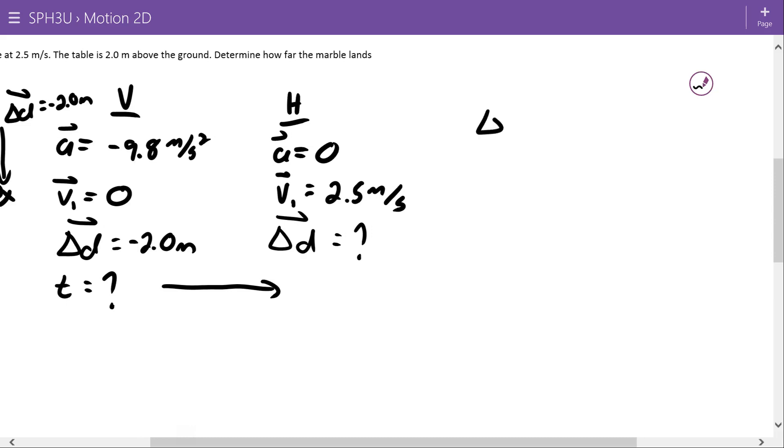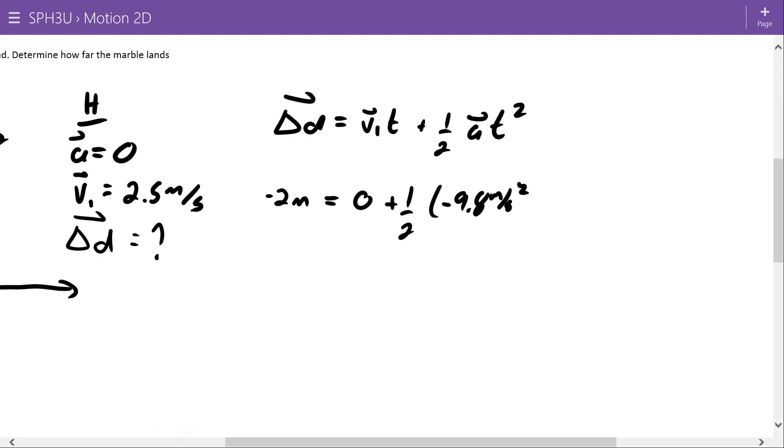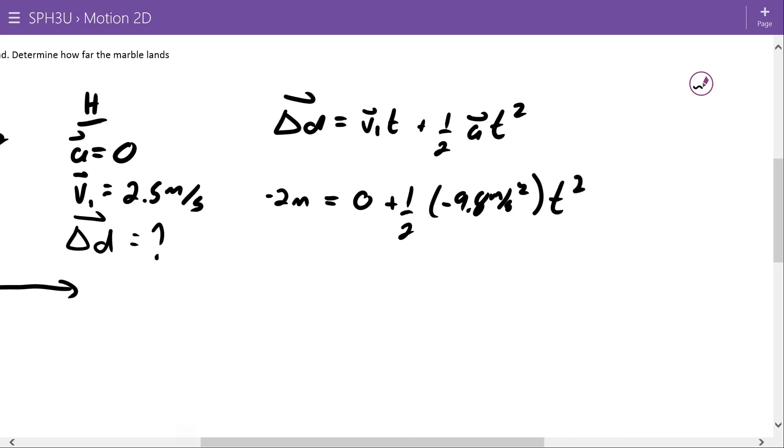The equation that relates time and the variables that we have is that delta d is equal to v1 t plus 1 half a t squared. d is negative 2. Here I'm using down as the negative direction. v1 is 0, so that whole term goes to 0, plus 1 half, that's negative 9.8 meters per second squared, t squared.